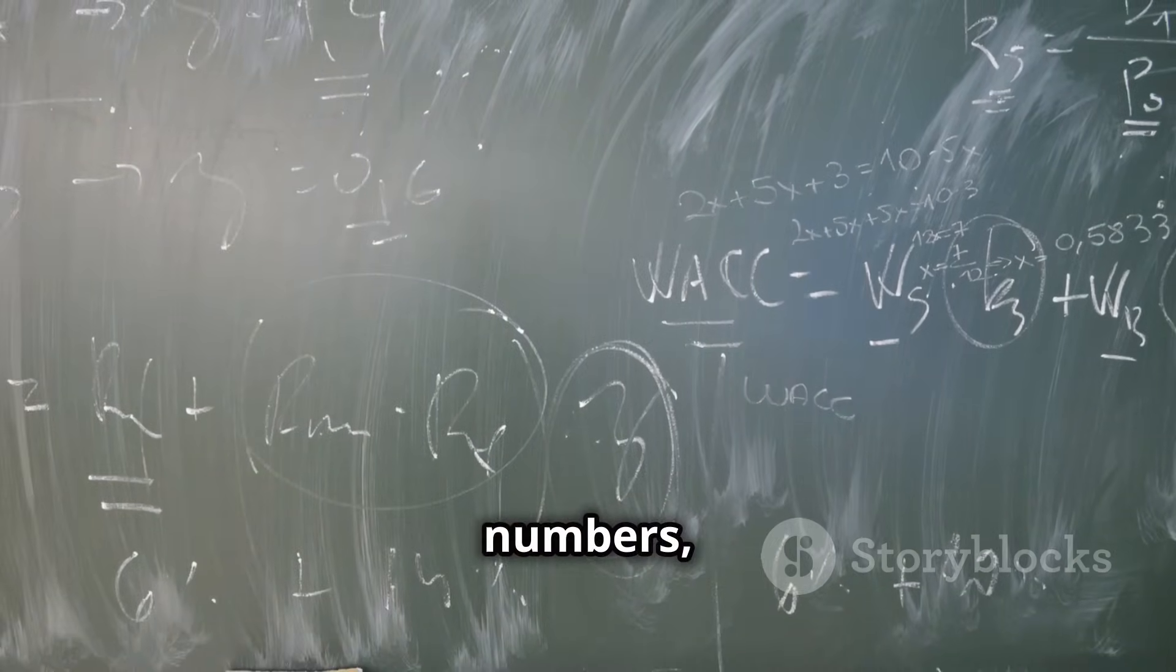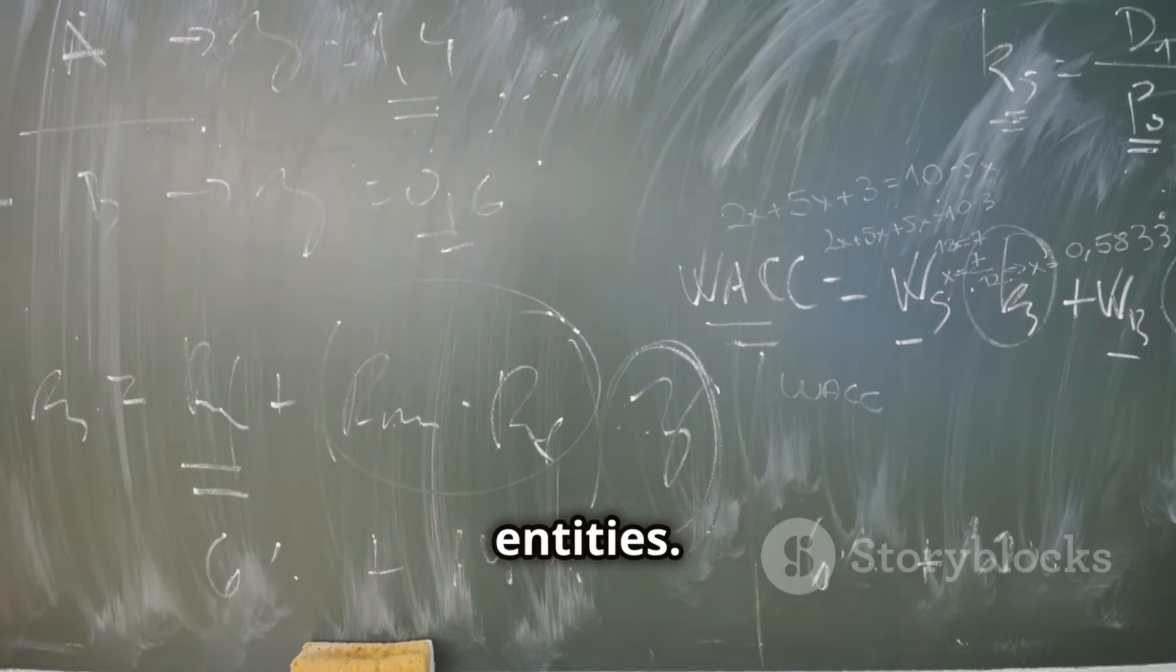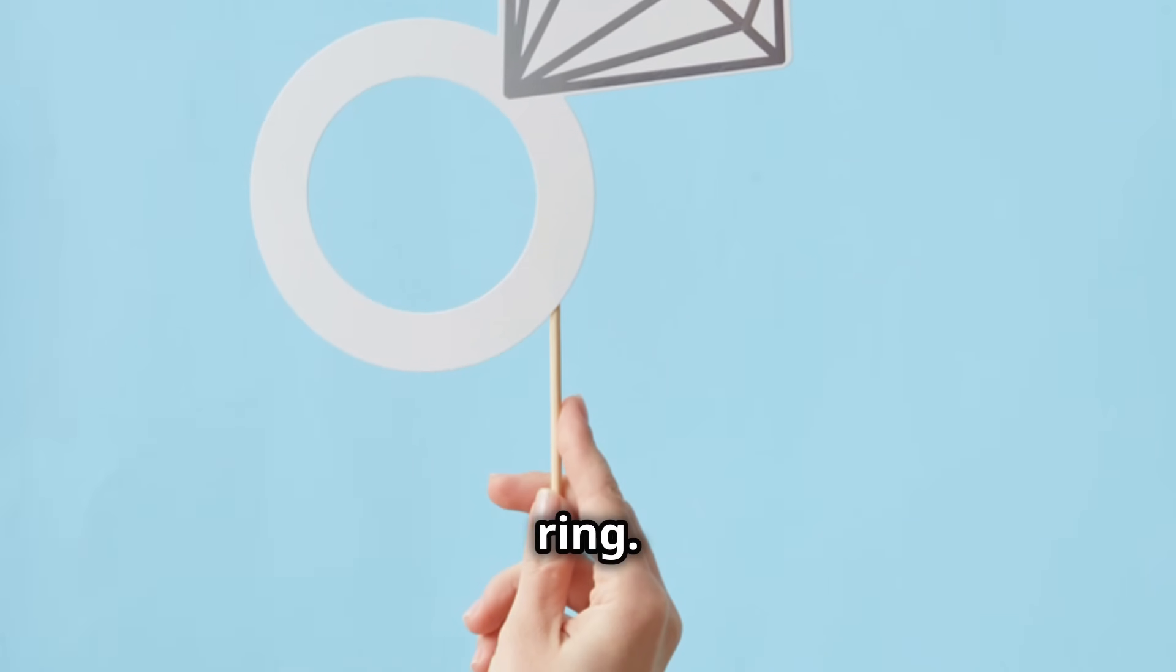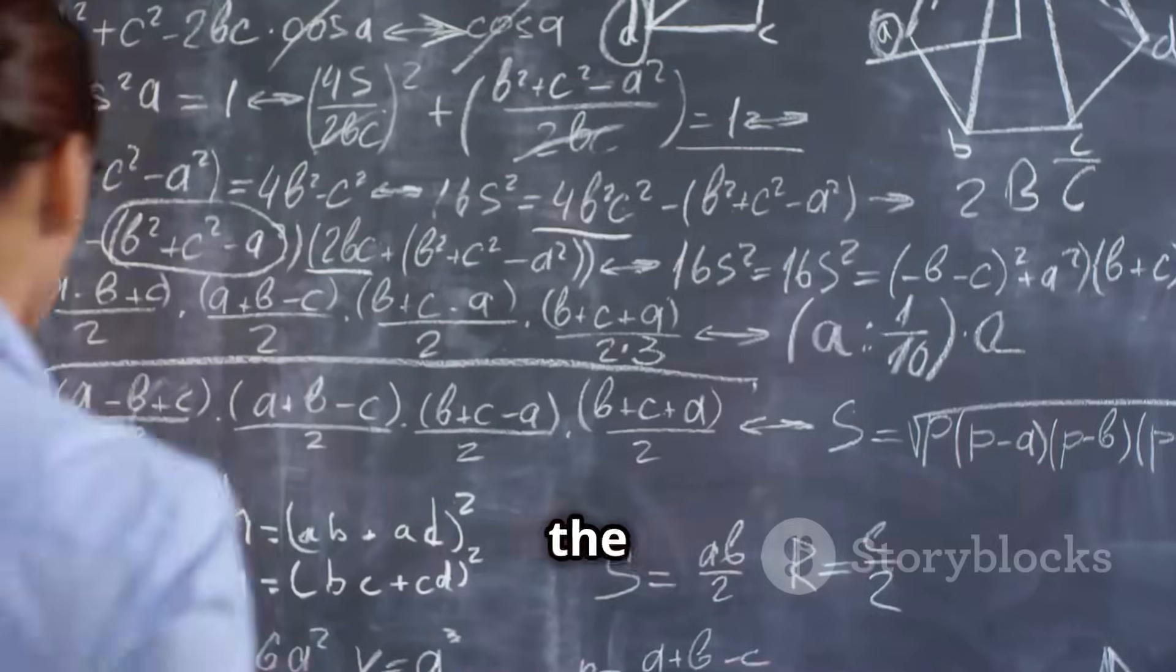These objects can be numbers, functions, or even more abstract entities. Ideals are special subsets within a ring. They help us understand the structure of the ring itself.